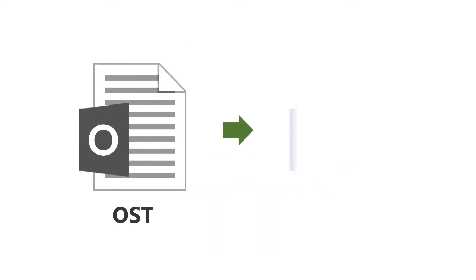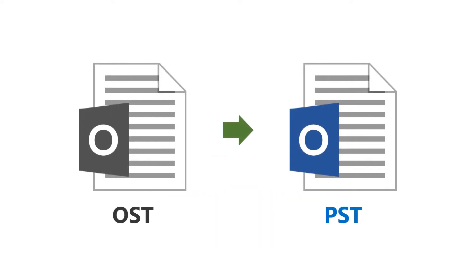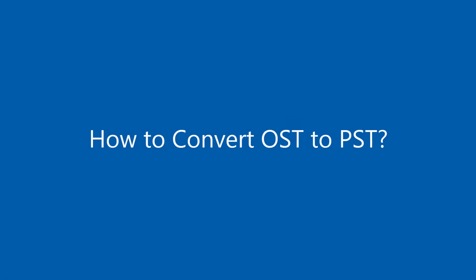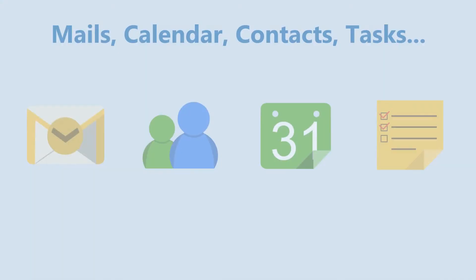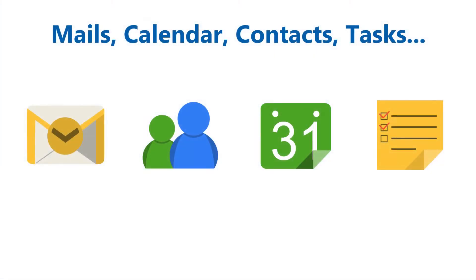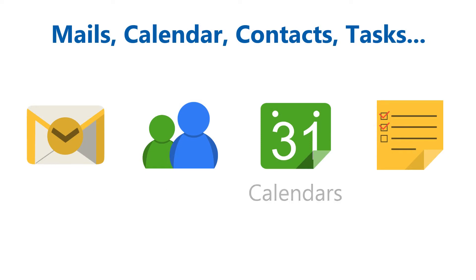When your offline OST file becomes inaccessible in MS Outlook, you have to convert it into a PST file. The challenge arises: how to convert an Outlook OST file to Outlook PST format. Your offline Outlook data file contains emails, contacts, calendar, tasks, and more.